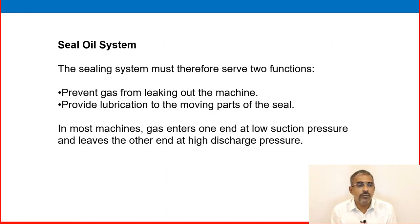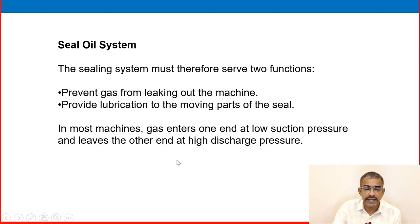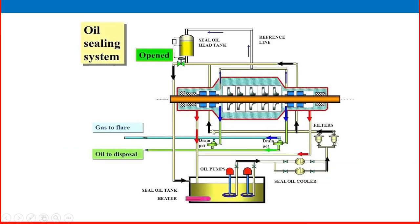Now we move to the seal oil system. The sealing system must serve two functions: prevent gas from leaking out of the machine, and provide lubrication to the moving parts of the seal. In most machines, gas enters one end at low suction pressure and leaves the other end at high discharge pressure. The seal oil system has a seal oil tank, seal oil pump, filter, and cooling system.